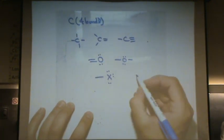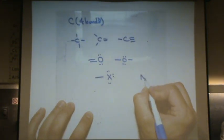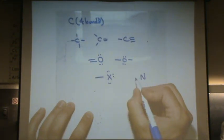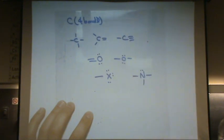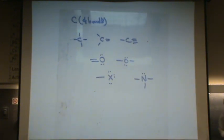The last one: nitrogen will usually look like this. It will always have three bonds and one lone pair.